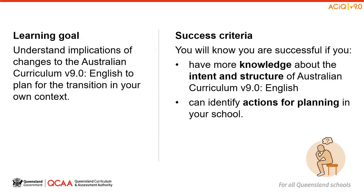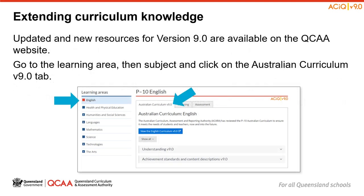As the session comes to a close, let us reflect on our learning goals and success criteria. We have built our knowledge about Australian Curriculum Version 9 English and identified some actions for planning in our particular school context. Before you begin the next session in the series, you may wish to access QCAA resources at the location noted on screen to extend your curriculum knowledge. There are many Version 9 resources located here that will support you in planning for the transition in your context. These can be accessed by going to the landing page for P-10 English and then clicking on the Australian Curriculum Version 9 tab.